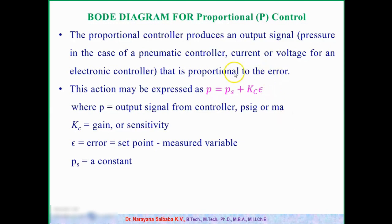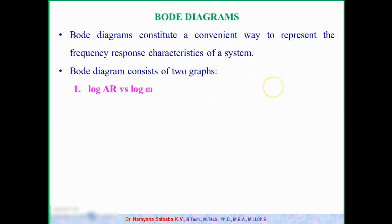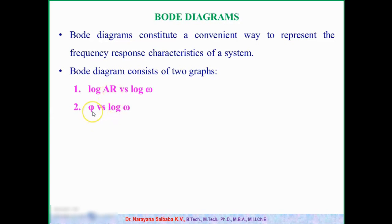For this system we are now going to draw the Bode diagram. The Bode diagram consists of two plots: log AR versus log omega, and phi versus log omega. In drawing Bode diagrams, we assume different values of omega and calculate the corresponding AR and phi values. From the generated data we can draw the Bode diagram, so AR and phi are very important.